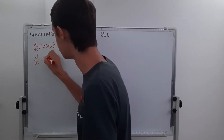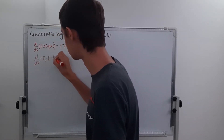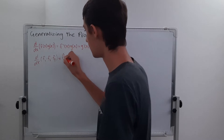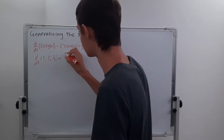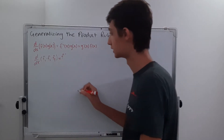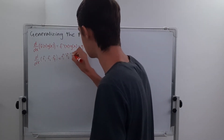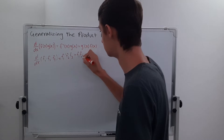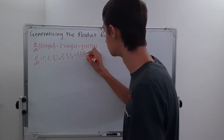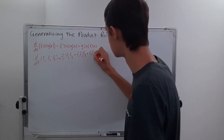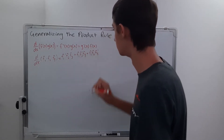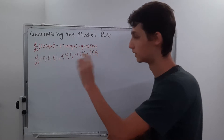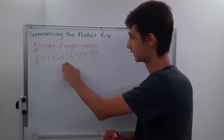So if we have the derivative of f1 times f2 times f3 — these are all functions of x — that's going to be the derivative of the first function times the second times the third, plus f1 times the derivative of f2 times f3, plus f1 times f2 times f3 prime. So you can see there's a pattern: you add up terms 1, 2, and 3. It's going to be all of the functions, except one of them is going to be the derivative.